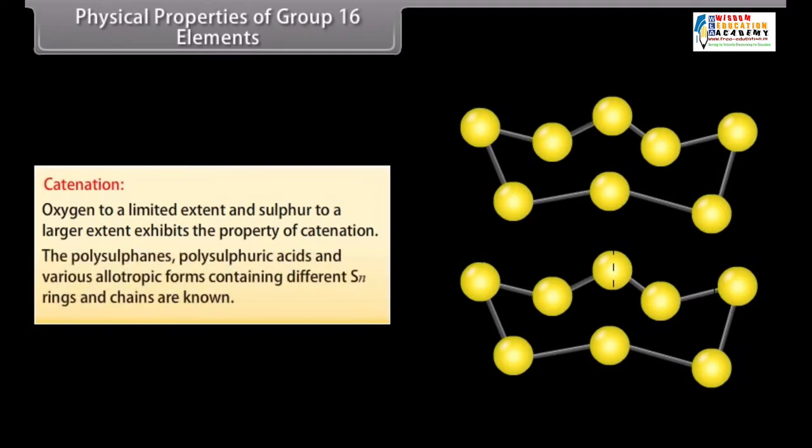The polysulfanes, polysulfuric acids and various allotropic forms containing different SN rings and chains are known. The sulfur-sulfur bond is very important in biological systems and occurs in proteins and enzymes.